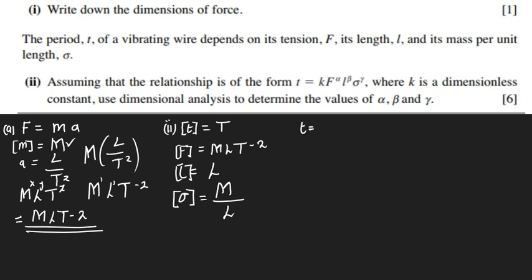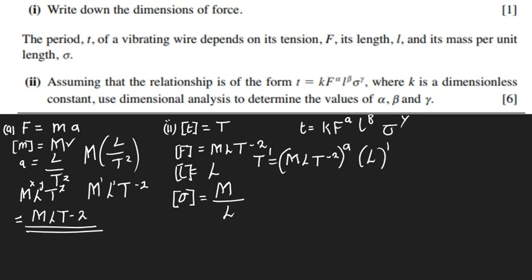We have the formula T equals some constant k times F to the power a, L to the power b, and sigma to the power y. Writing in dimensional form: T to the power one equals k times M L T negative two, all in brackets, to the power a, then L to the power b, then M L negative one to the power y.